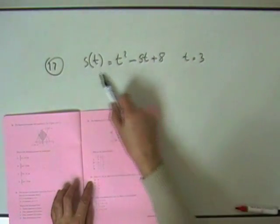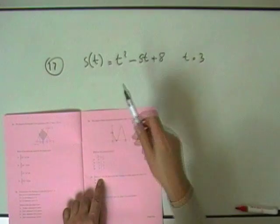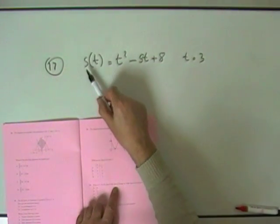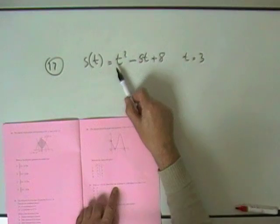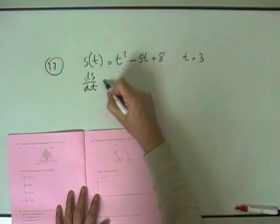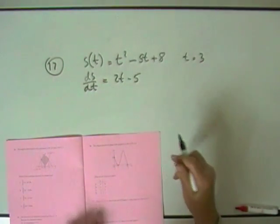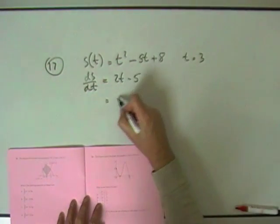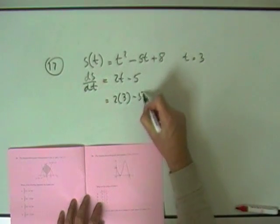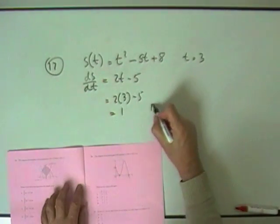17. There's a formula here. It's got a quadratic. It says s(t). That could be a distance formula. But it just says, what's the rate of change of s with respect to t when t is 3? Well, the rate of change of s with respect to t. That's the derivative. So that'll be 2t minus 5. What's the actual value when you put 3 into that? That'll be 2 times 3 minus 5. 6 minus 5, 1. Answer B.